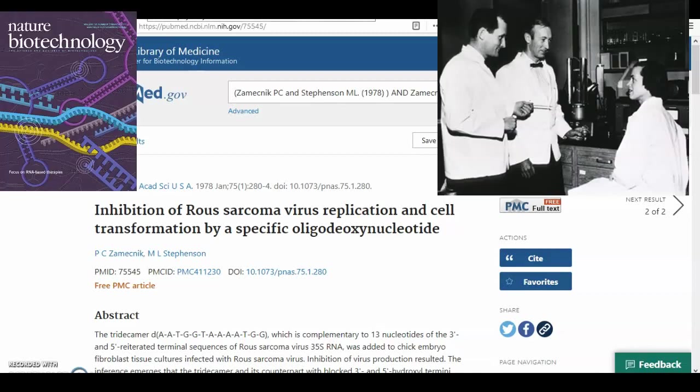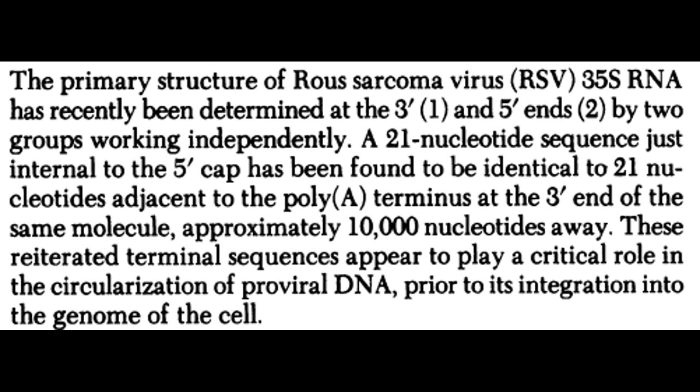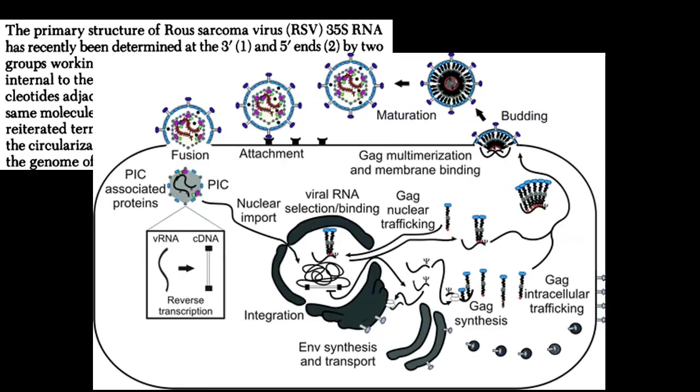Using nucleotide sequences from the 5' and 3' ends of the 35S RNA of Rous sarcoma virus (RSV), Zamachnik and Stevenson identified a repeated sequence of 21 nucleotides that appeared to be crucial to viral integration. They synthesized a 13-mer oligonucleotide complement to a portion of this viral sequence.